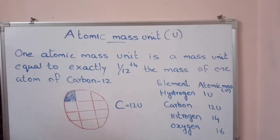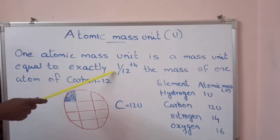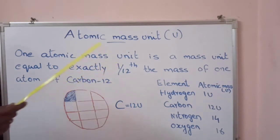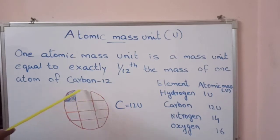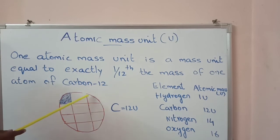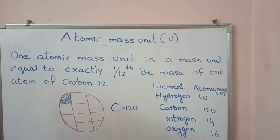1 atomic mass unit is a mass unit equal to exactly 1/12 the mass of 1 atom of carbon-12. Consider this as an atom of carbon-12. Carbon-12 means the mass of that carbon is 12.